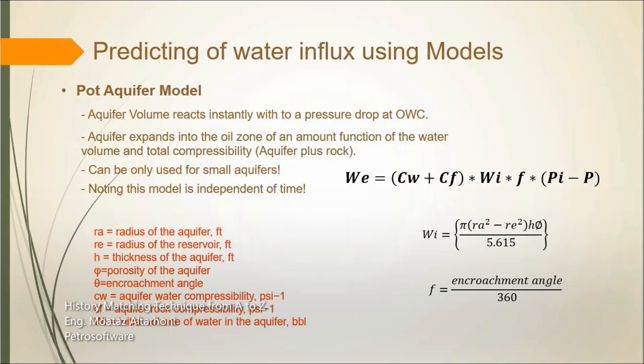We don't have any wells in our aquifer, so it will be predicted and changed, then we compare that with our history matching. In this equation, being independent of time means that when the pressure drops in our reservoir, the water influx immediately invades the reservoir, affected by water and rock expansion. But that will not work if we have a strong water influx like in our case. When we have a huge volume or strong aquifer, we cannot use the bot aquifer model because it will need time.